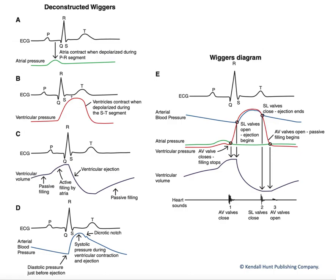Here we're going to look at the Wigger's Diagram. The Wigger's Diagram is a very complex figure, shown here on the right, that lays out the cardiac events that all occur in a particular pattern within each cardiac cycle. It's hard to delineate what's going on within this complex diagram without looking at them essentially one at a time — the individual components. So we have a deconstructed Wigger's over here on the left.